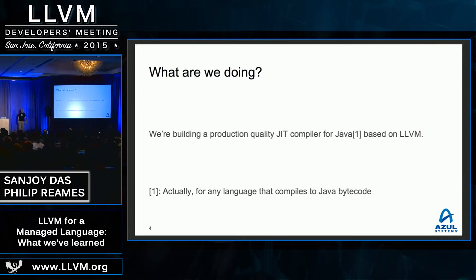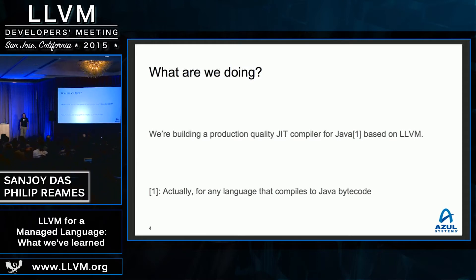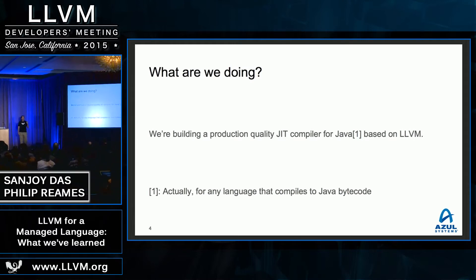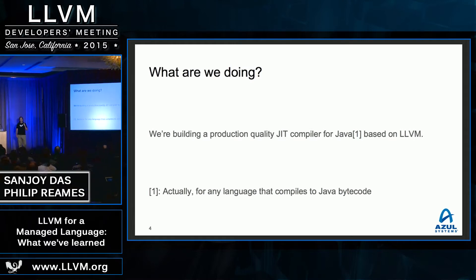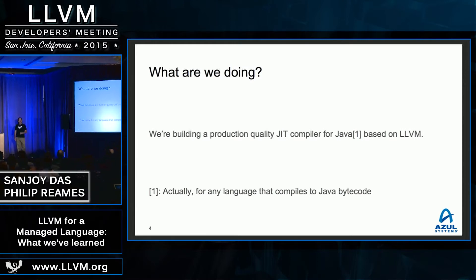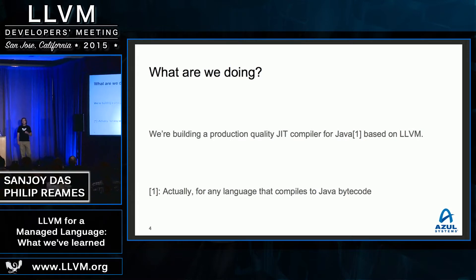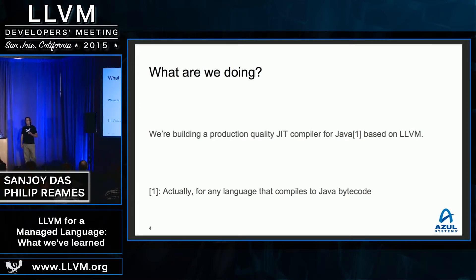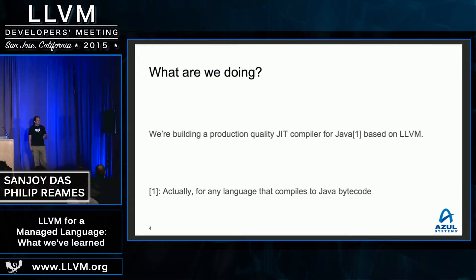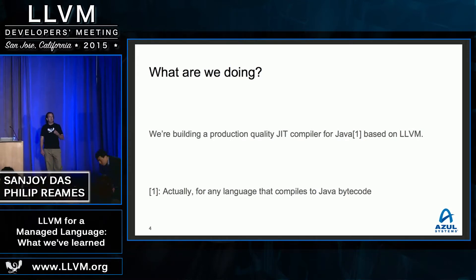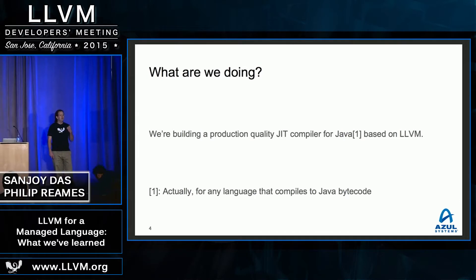What we are in the process of doing is building a production-grade just-in-time compiler for Java bytecode. We're going to mostly focus on Java today, but this is a compiler for Java bytecode and is valid for any language that compiles to bytecode.